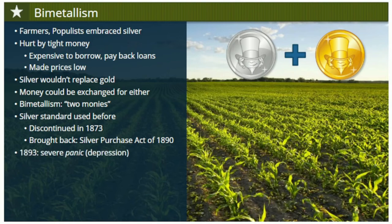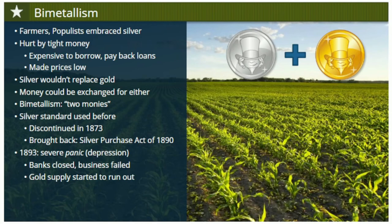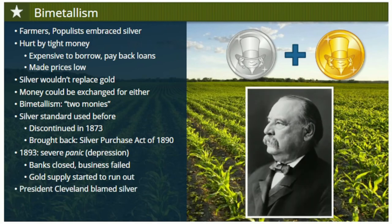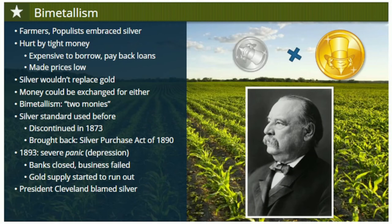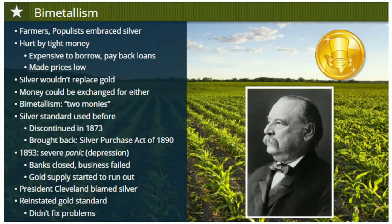But in 1893, the nation experienced a severe panic or depression. Banks closed, businesses failed, and unemployment soared, especially in cities. There was a run on banks as many people tried to cash in their dollars for gold, and as a result, the nation's gold supply started to run out. President Grover Cleveland concluded that silver was the problem destabilizing the currency. He responded by repealing the Silver Purchase Act and reinstating a strict gold standard, believing that silver had weakened the currency and caused the crisis. Whatever the president was hoping to accomplish, it didn't work — the gold supply continued to run out, and the U.S. was in danger of going bankrupt.